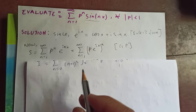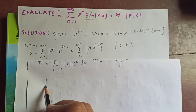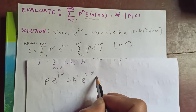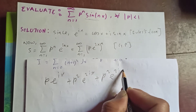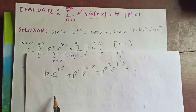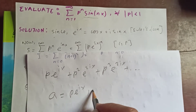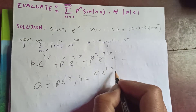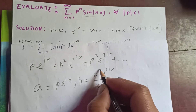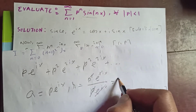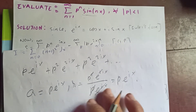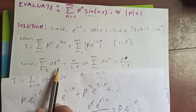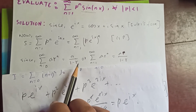Let's expand this sum. For n=1: p·e^(ix), plus p²·e^(2ix), plus p³·e^(3ix), and so on. The first term is p·e^(ix) and the common ratio is p²·e^(2ix) divided by p·e^(ix), which simplifies to p·e^(ix). Using the geometric series formula — sum from n=0 to infinity of a·r^n equals a/(1−r) — our first term is p·e^(ix) and common ratio r is p·e^(ix).